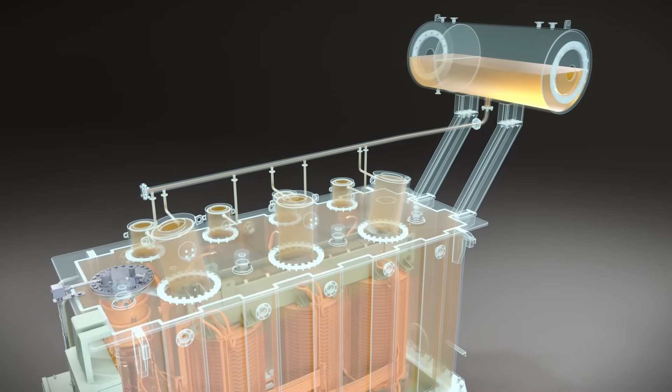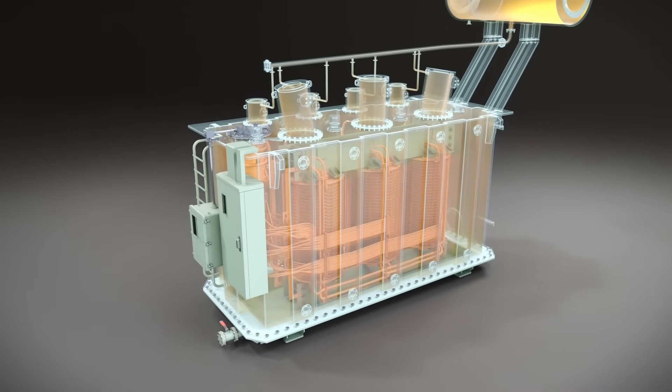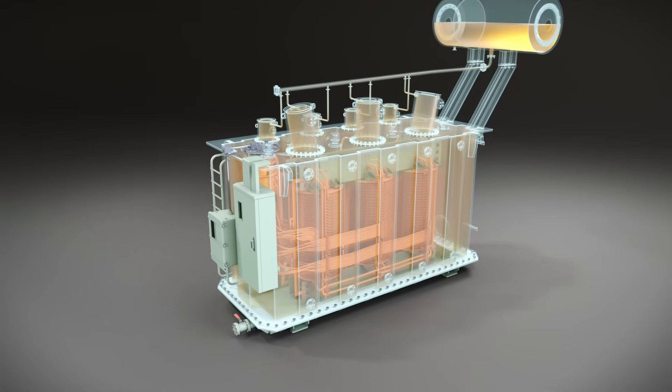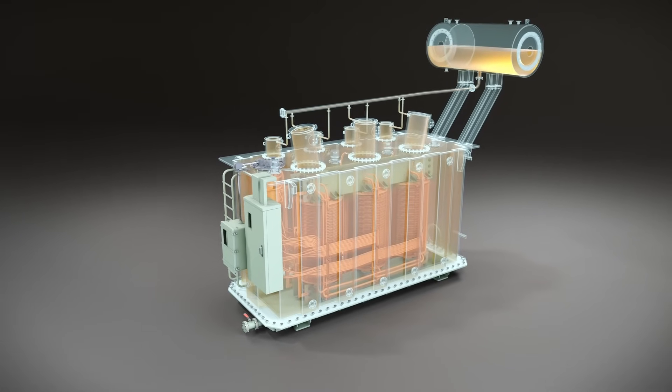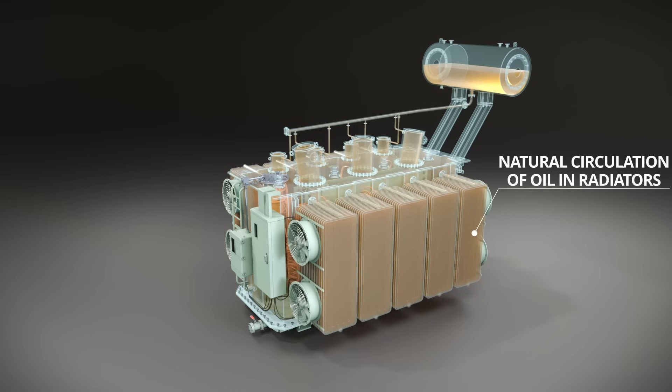Transformer oil plays a crucial role in the operation of power transformers by serving two main purposes. First, its high dielectric strength allows it to function as an insulating medium, preventing short circuits within the transformer. Second, it acts as a cooling medium. During operation, transformer windings generate significant heat due to electrical losses. The oil absorbs this heat and dissipates it efficiently, ensuring the transformer operates within safe temperature limits.